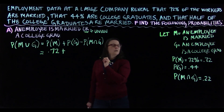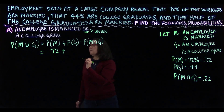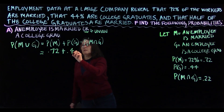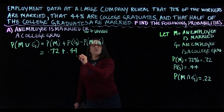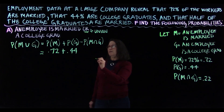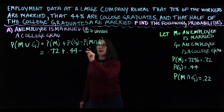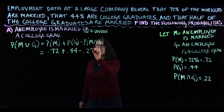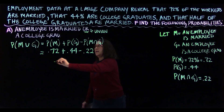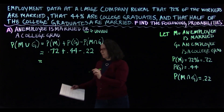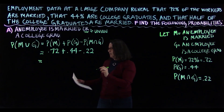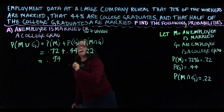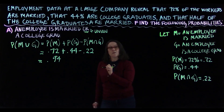Plugging in the values: the married employees were 72%, the college graduates were 44%, and the overlap — the married college graduates — were 22%, which we subtract to remove the double-count. That gives us 0.72 + 0.44 − 0.22, and I got 94%.